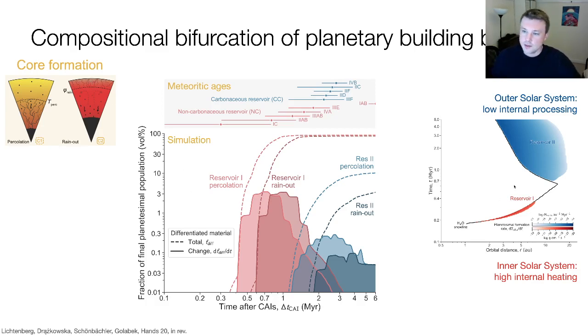Our simulations produce peaks of core formation, these are planetesimal bursts, one at around one million years for reservoir one and around two to three million years for reservoir two. This explains the clustering of ages in the meteoritic record for the NC reservoir and for the CC reservoir.